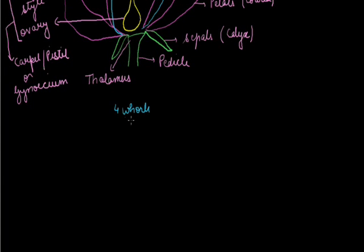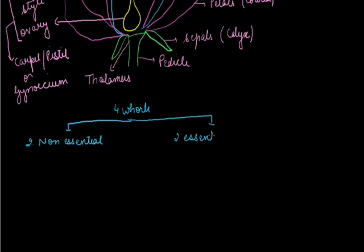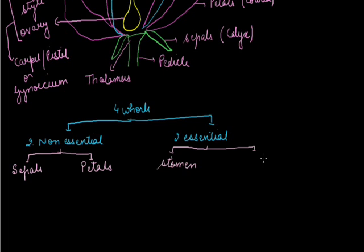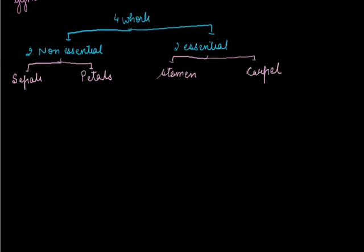A flower has four whorls, of which two are non-essential and two are essential. The non-essential whorls are sepals and petals, and the two important essential whorls are stamen and pistil, which we can also call carpel. First, we are dealing with the topic of sepals.